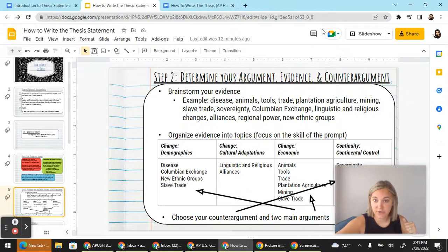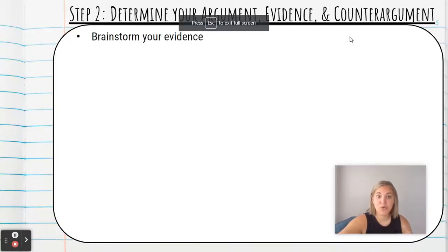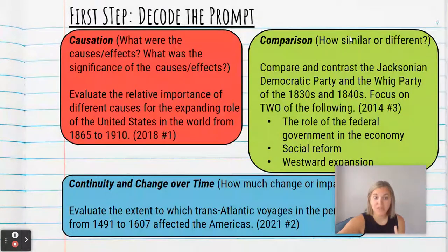And when you actually present this for your students it's not going to all populate at once. So you will pause the video to have students brainstorm their evidence and the prompt that they're going to be working through is this continuity and change over time prompt. Evaluate the extent to which transatlantic voyages in the period from 1491 to 1607 affected the Americas.